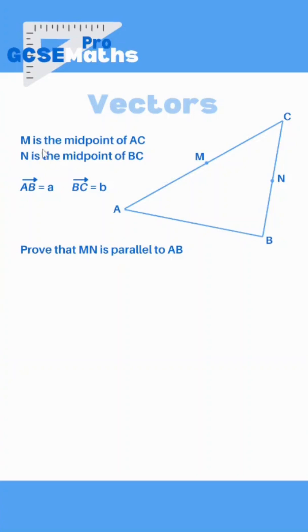We've got here that M is the midpoint of AC and N is the midpoint of BC. We're told that the vector AB can be written as lowercase a, so I'm going to draw that on with the same direction, and the vector BC can be written as b, so somewhere along here that's b. Prove that MN is parallel to AB.